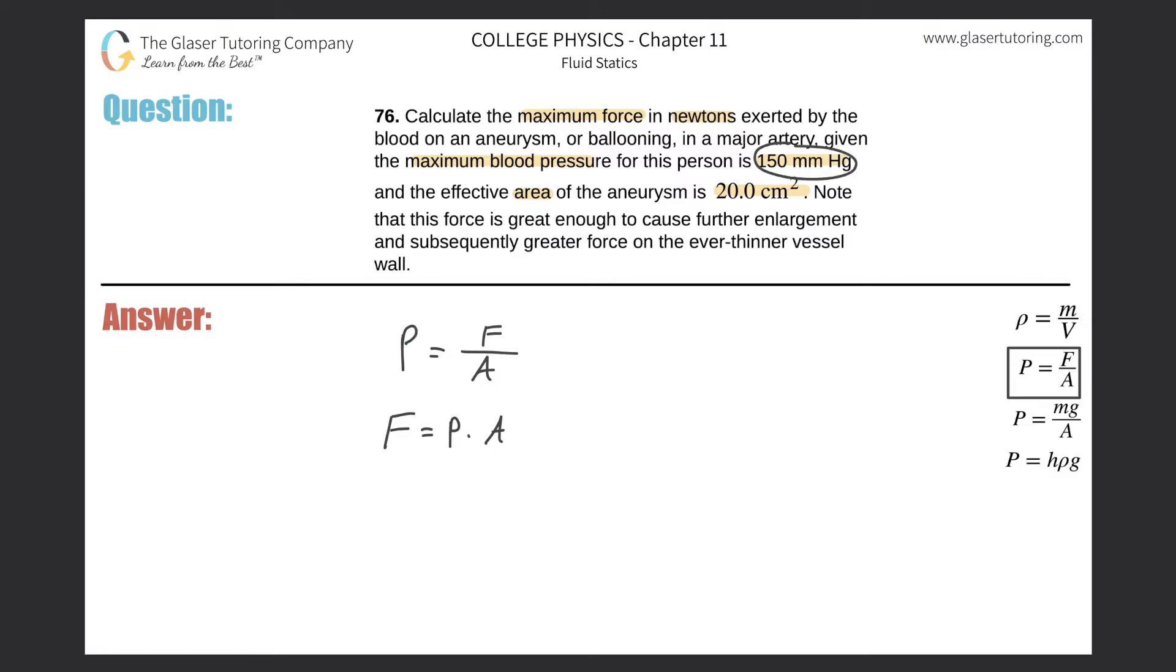Now in terms of doing the conversion from millimeters of mercury into pascal, you can do this in a couple of ways. What you could do is actually substitute in this formula for the pressure of the mercury. Why? Well, they told you the height, right, 150 millimeters. They also told you that it is mercury, so you know the density of it, and you know gravity.